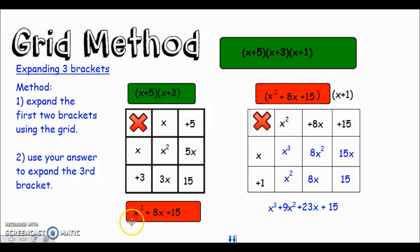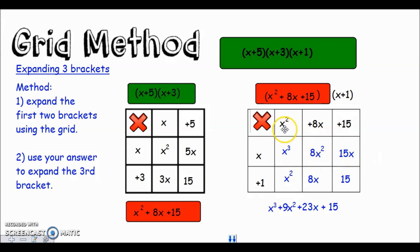The answer to the first two brackets is x squared plus eight x plus fifteen. Taking that answer, you set it up in the larger grid with three terms at the top and the final bracket on the side: x squared times x is x cubed, eight x times x is eight x squared, fifteen times x is fifteen x, x squared times one is x squared, eight x times one is eight x, fifteen times one is fifteen. Combining: eight x squared plus one x squared gives nine x squared, fifteen x plus eight x gives twenty-three x, and the number is just fifteen.